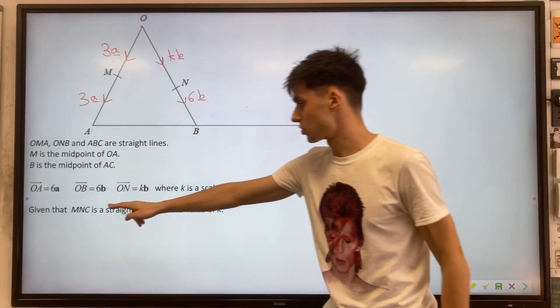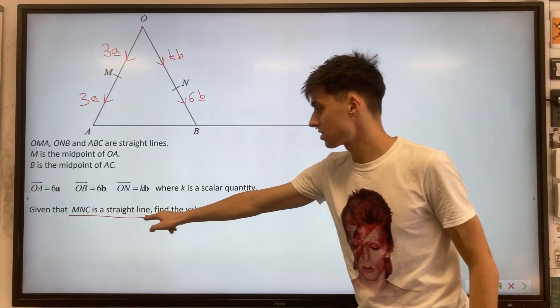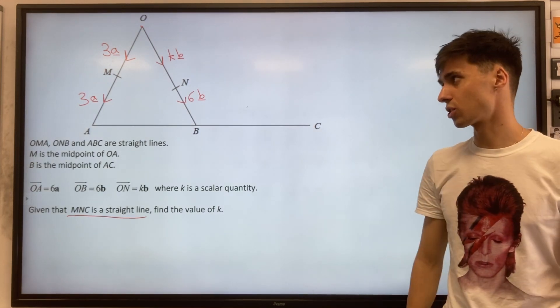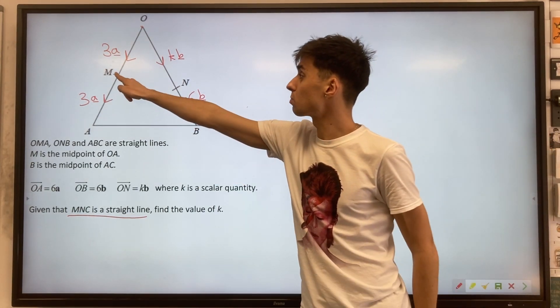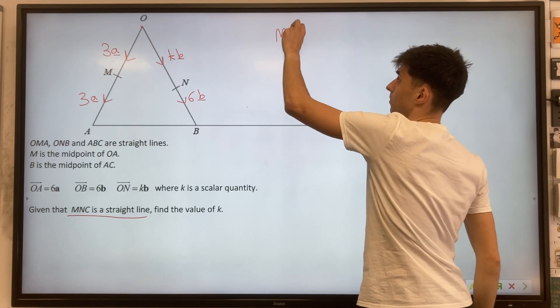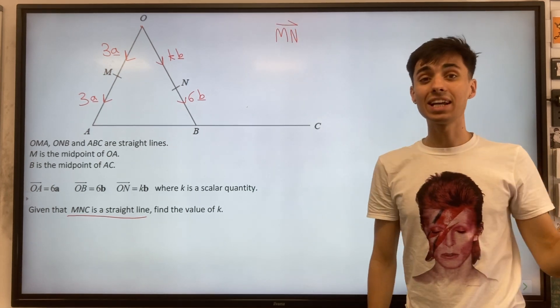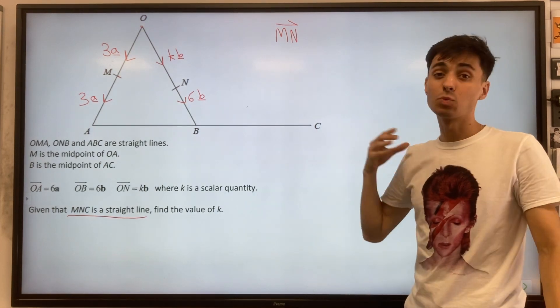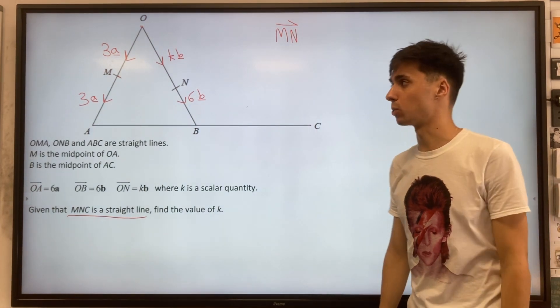Let's see what we need to do. MNC is a straight line. So what this normally means in vector questions is we should find the smaller part of this line. We want to find the vector MN, and then later on, we're going to find the vector MC and work with them being scalar multiples of one another.